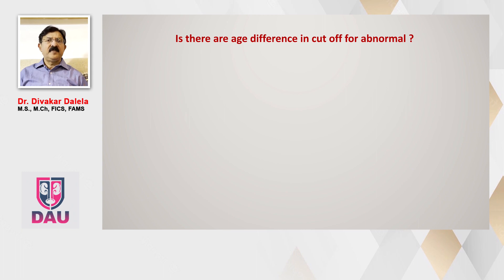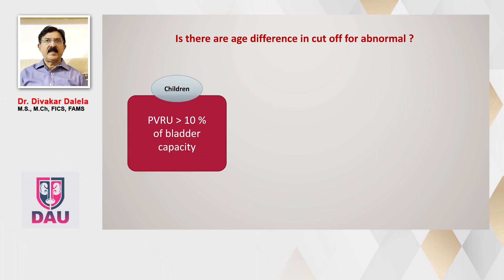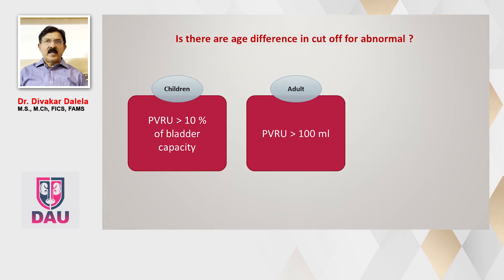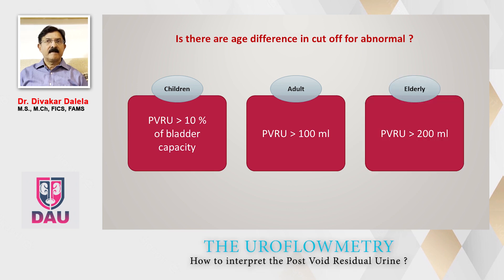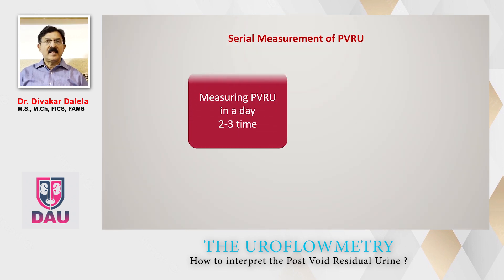Is there an age difference in cut-off values for abnormality? Yes, there is. For children, more than 10% of the bladder capacity is considered abnormal. For adults, as I just said, PVRU more than 100 ml is considered important. And for the elderly, PVRU more than 200 ml must be considered important. You must do a serial measurement of post-void residual urine volume.